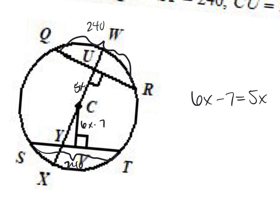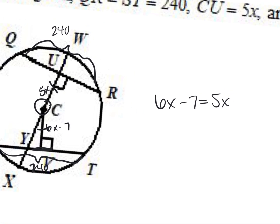It cuts the chord in half. And those chords, if they're the same length, are the same distance from the center. So that perpendicular mark says that the distance from point C to this line is the same as the distance from C to the other chord. That's why Sophia was able to set these two equal to each other.